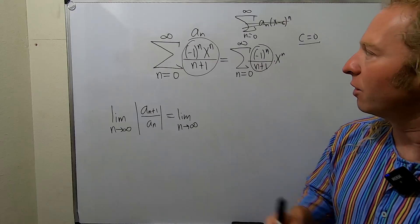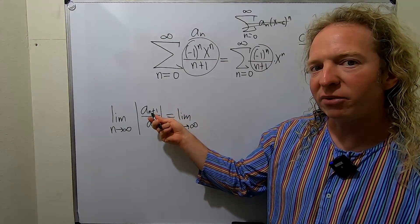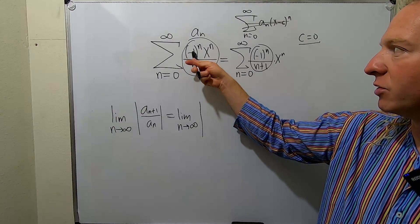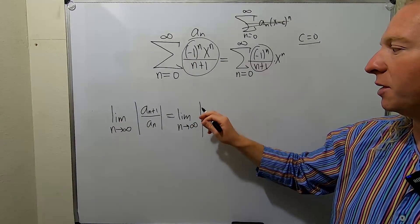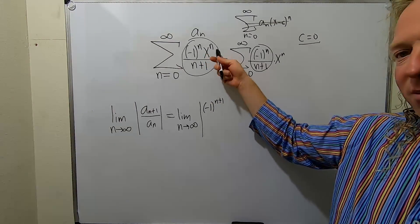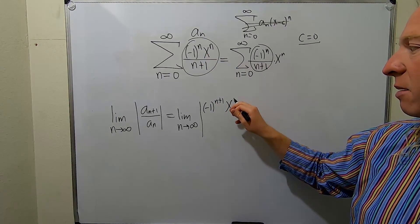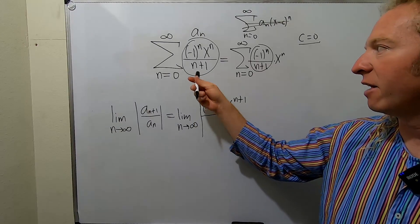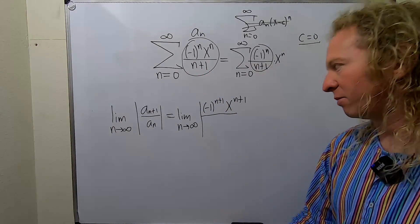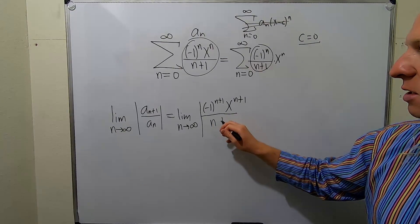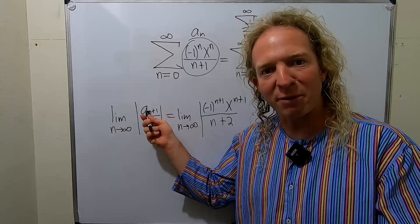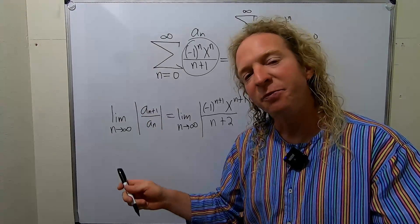First we have to plug in n plus one for all of the n's. So let's go ahead and replace all of the n's with n plus one. It'll be negative one to the n plus one, then we have x to the n plus one, and then on the bottom we have n plus one plus one, which is n plus two. So the only thing that's been written on the board so far is a sub n plus one. You might say well that's supposed to be up top, supposed to be divided by a sub n. This is true.